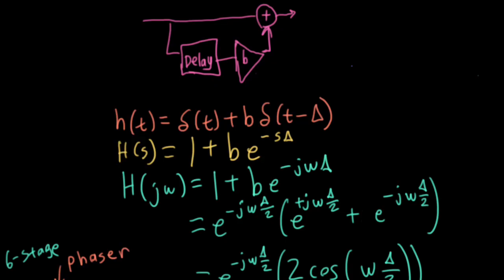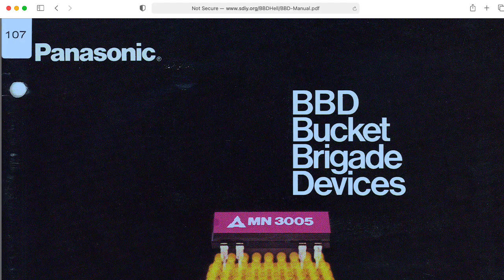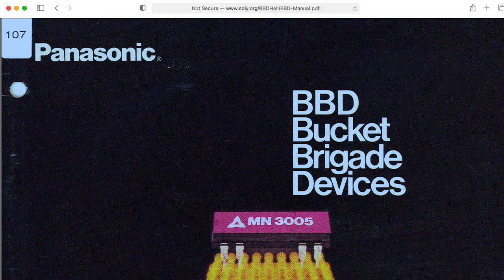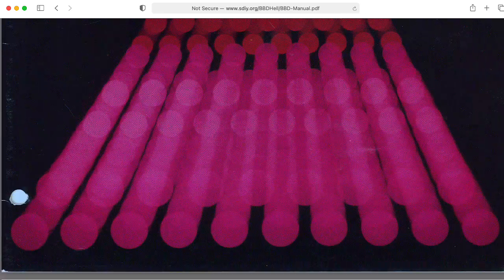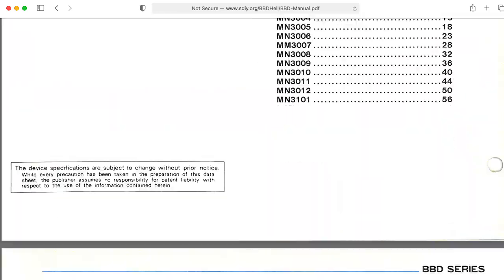Now, I haven't told you how we actually achieve that delay. This is typically done using something called a bucket brigade device, or BBD, and that will be the subject of the next lecture.